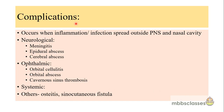Complications of chronic rhinosinusitis occur when inflammation and infection spread outside the sinuses or nasal cavity. Neurological complications include meningitis, epidural abscess, and cerebral abscess. Ophthalmic complications occur because the lamina papyracea is a very thin bone dividing the orbit from the paranasal sinuses — infection can spread to the orbit causing orbital cellulitis, orbital abscess, and potentially cavernous sinus thrombosis. Systemic complications include sepsis. Other complications include osteitis and sino-cutaneous fistula.